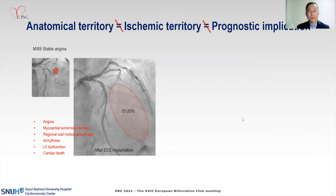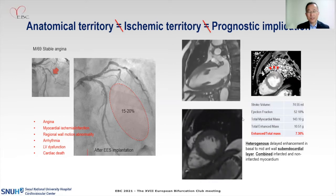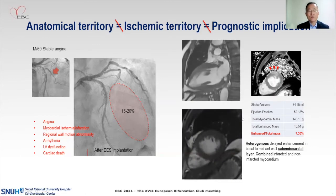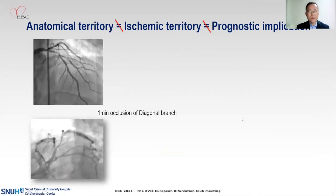After stent implantation, a big single diagonal branch was occluded. From visual estimation, it seems to supply 15 to 20% of the whole myocardial mass, so it should cause symptoms, ischemia, infarction, wall motion abnormality, arrhythmia, or other serious problems. However, looking at the MR scans, you cannot find any significant wall motion abnormality, and occlusion of this branch caused only heterogeneous delayed enhancement — a mixture of infarcted and non-infarcted myocardium. So even if it looks very significant anatomically and in ischemic territory, its influence on symptoms, wall motion abnormality, and all subsequent elements of vessel significance is different.